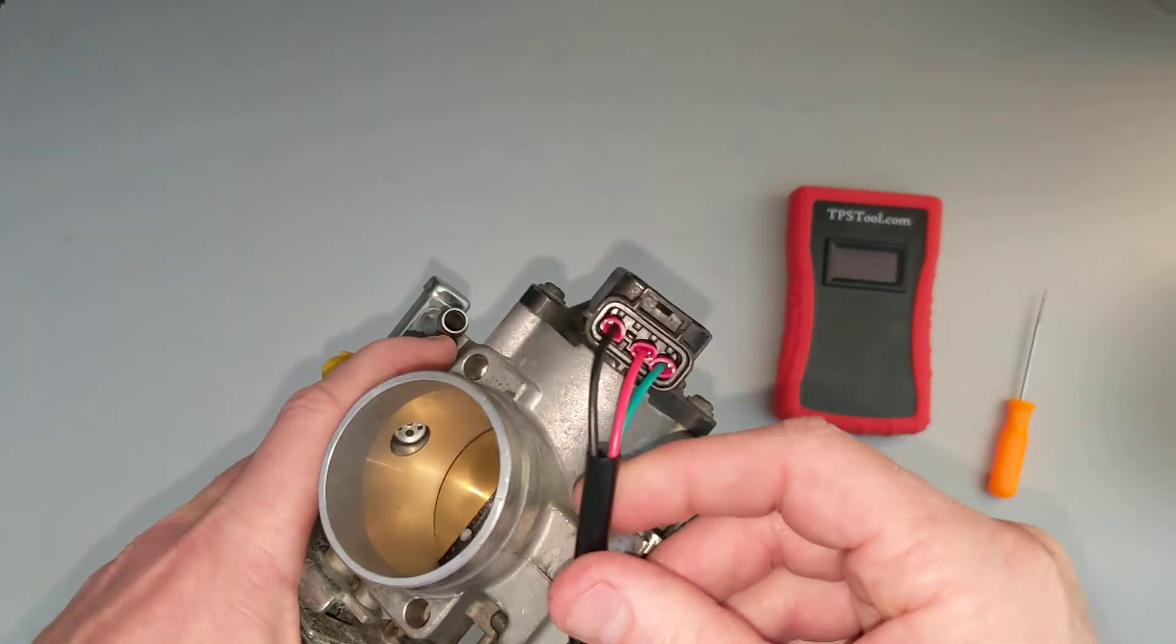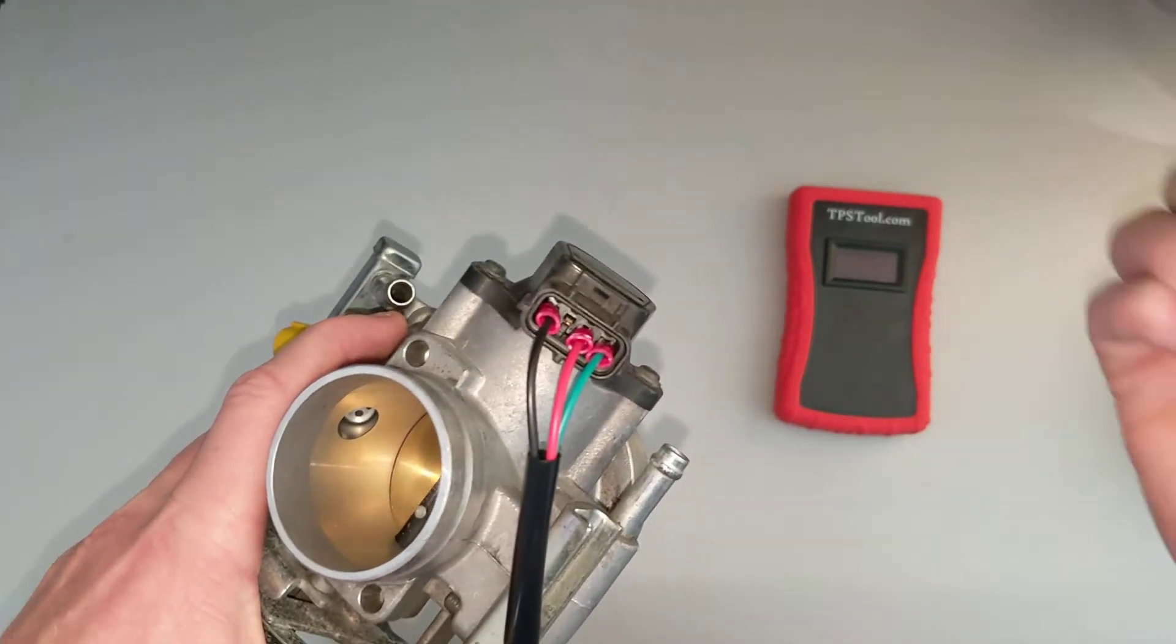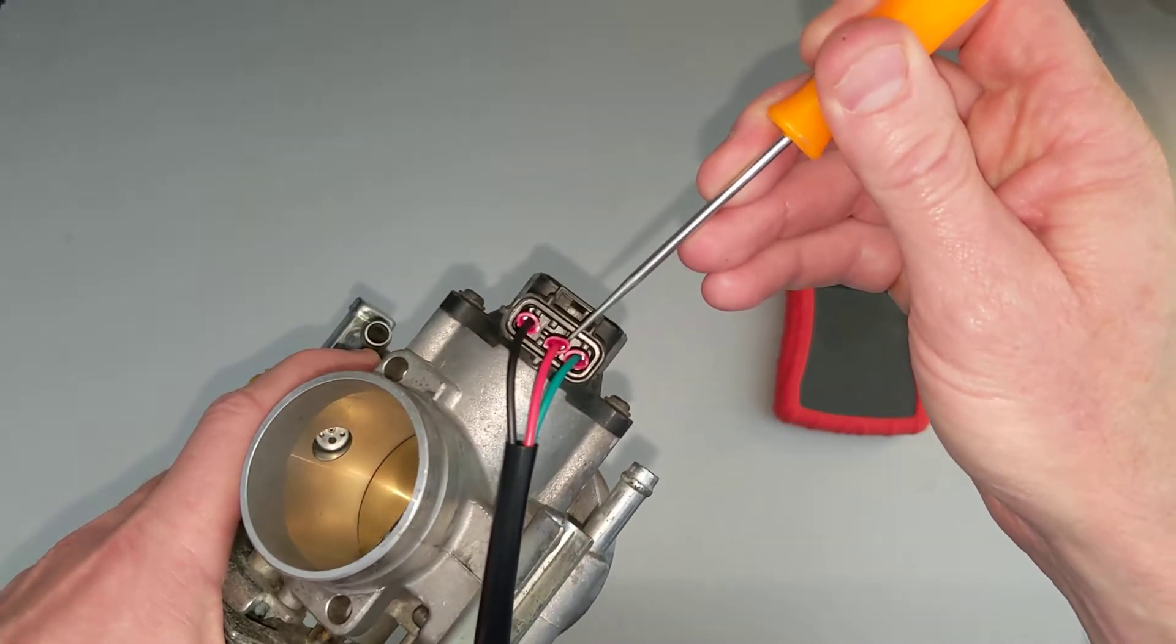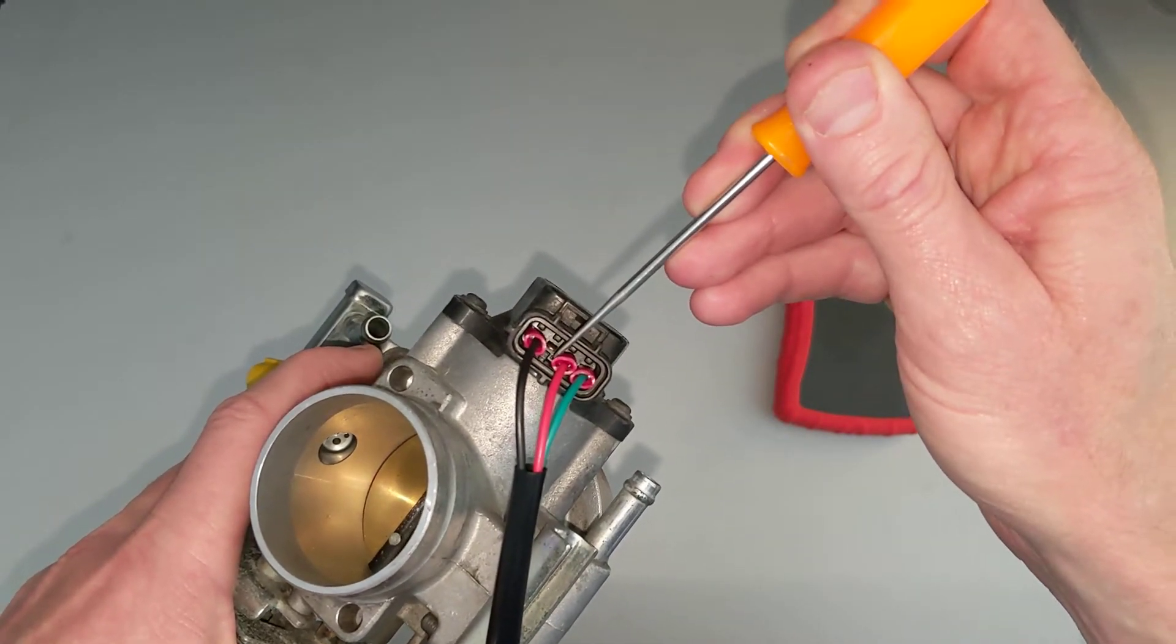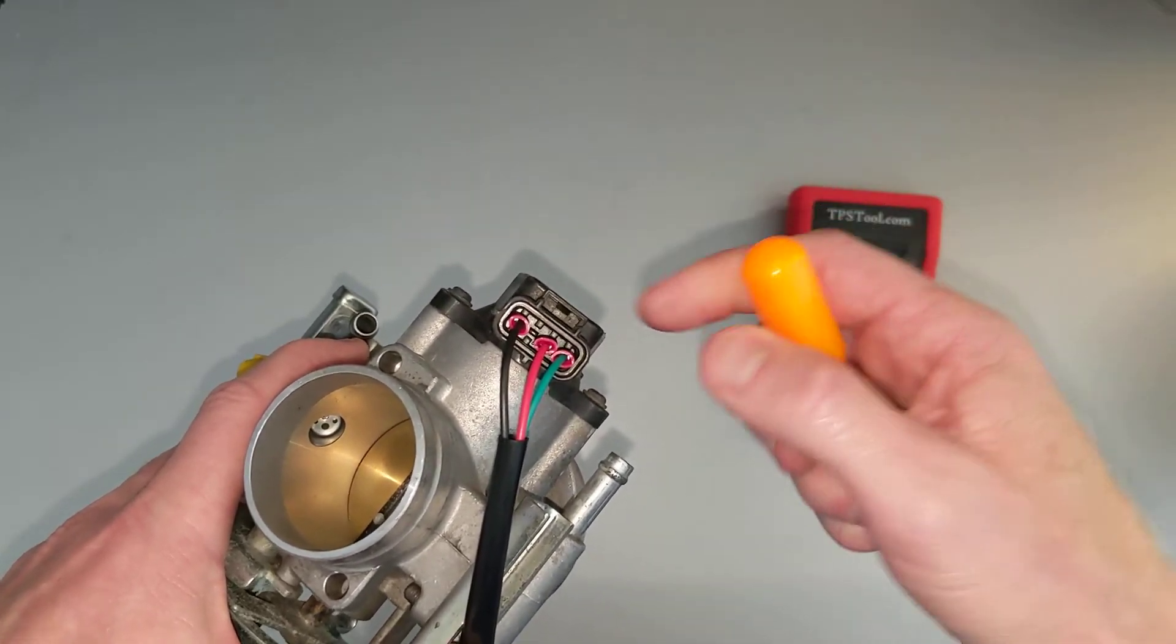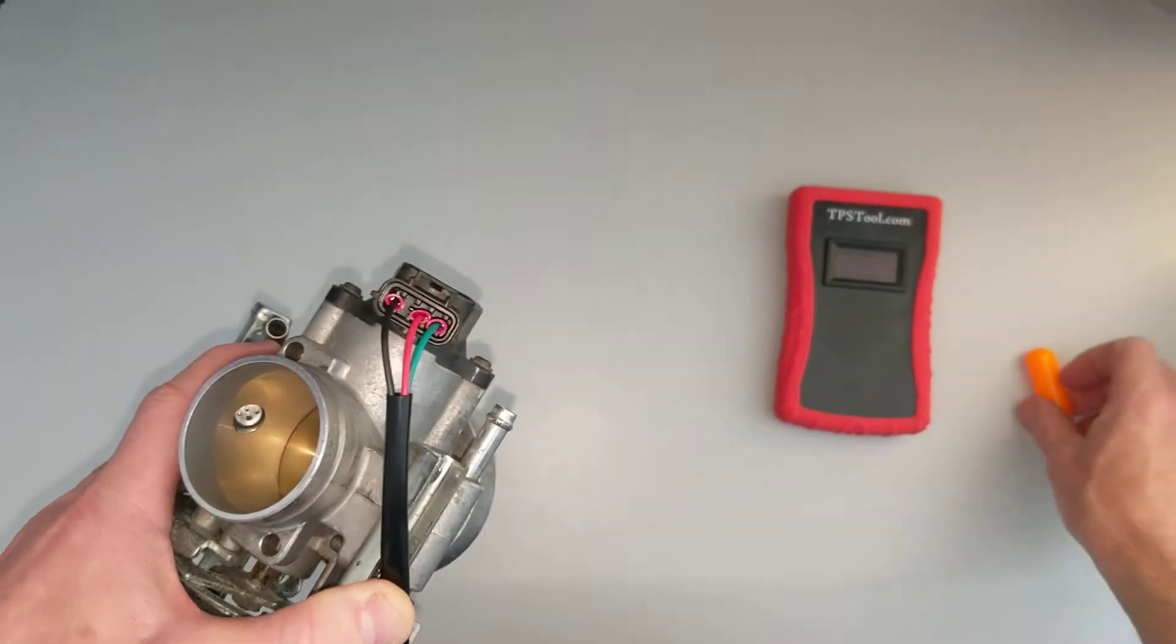So we've got the green as a 5-volt supply here. The red is the feedback. That's what goes back to your ECU on your engine. Skip one, and the black is the ground. And that fourth pin is used for a different type of feedback that we don't need to set the position of the TPS at this time.